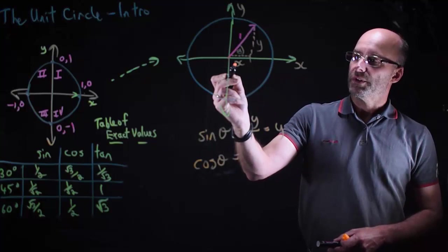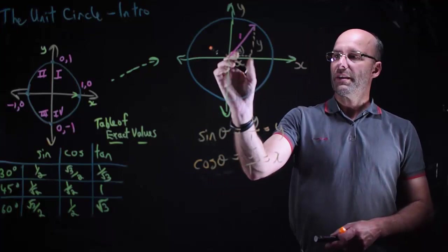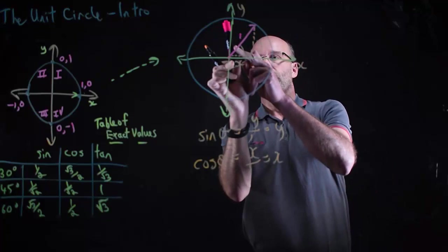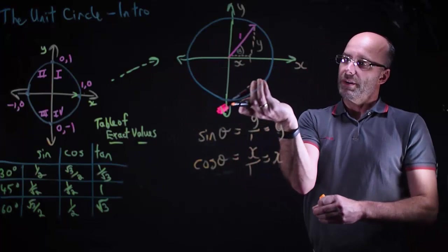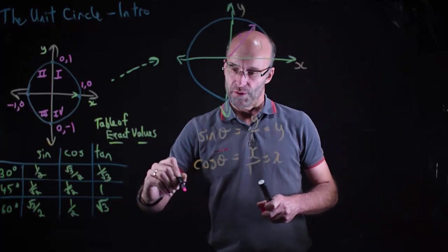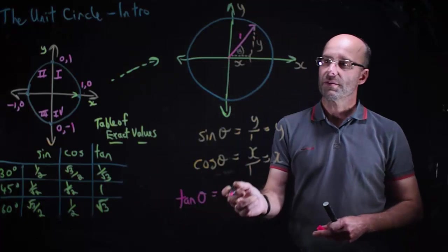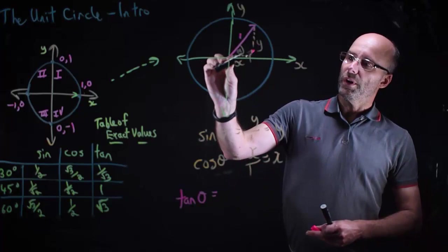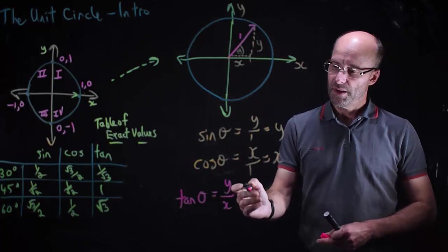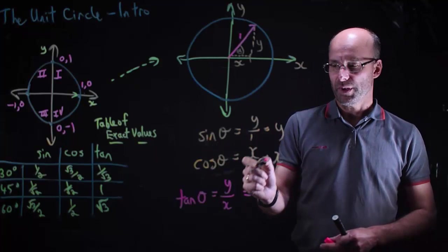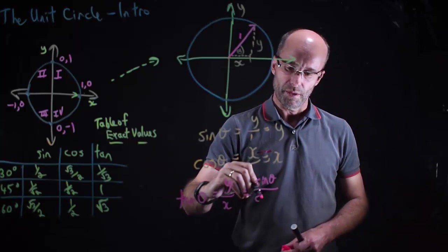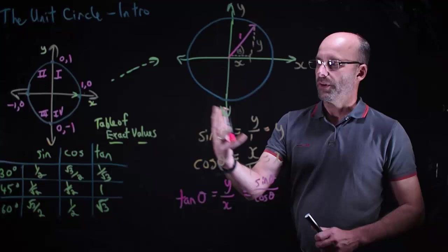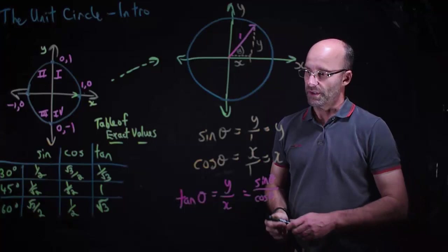Cosine is adjacent over hypotenuse, which is x over 1, which is just x. So cosine gives all the x-values as the radius arm moves around. Tan is opposite over adjacent, which is y over x. For the real thinkers: since sin θ = y and cos θ = x, we can also write tan θ = sin θ / cos θ. That's an interesting result we can use to find exact values.